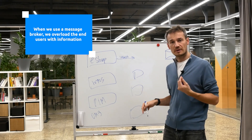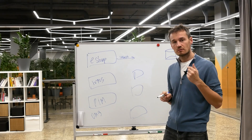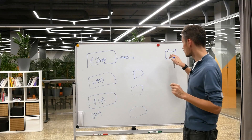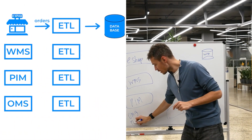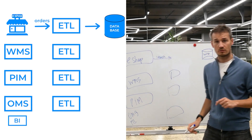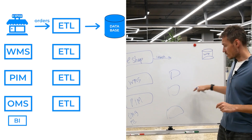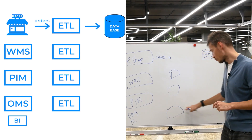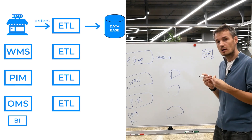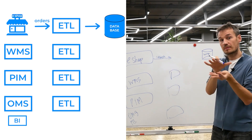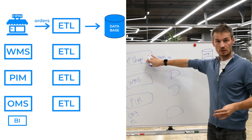Another thing I want to share is about adding new systems. When we have orders here, no matter what system we want to add — for example, a BI system — we already have orders, we already have product cards that we can relate to, and we have the status of orders that come from an OMS system. So we have everything we need to start collecting and processing retrospectively, and we don't have to ask for the initial data upload.